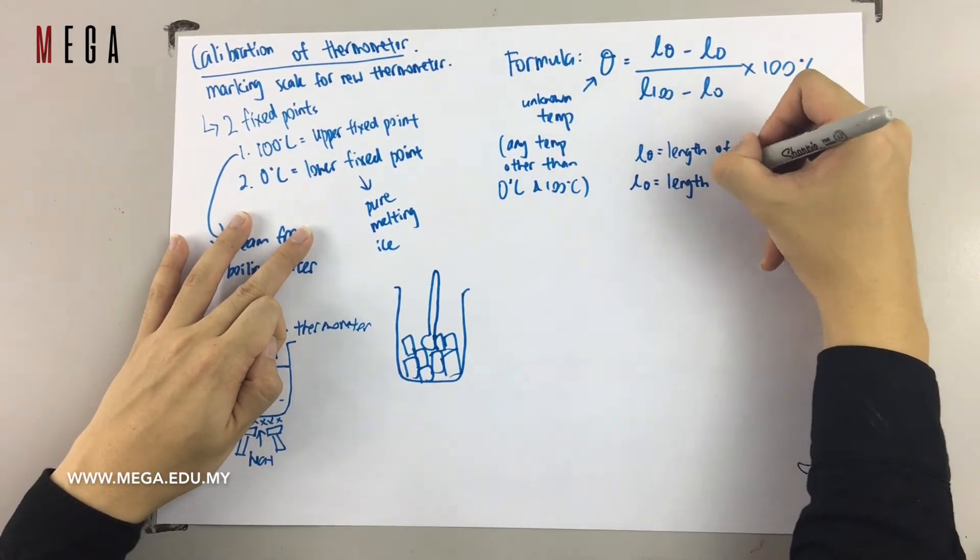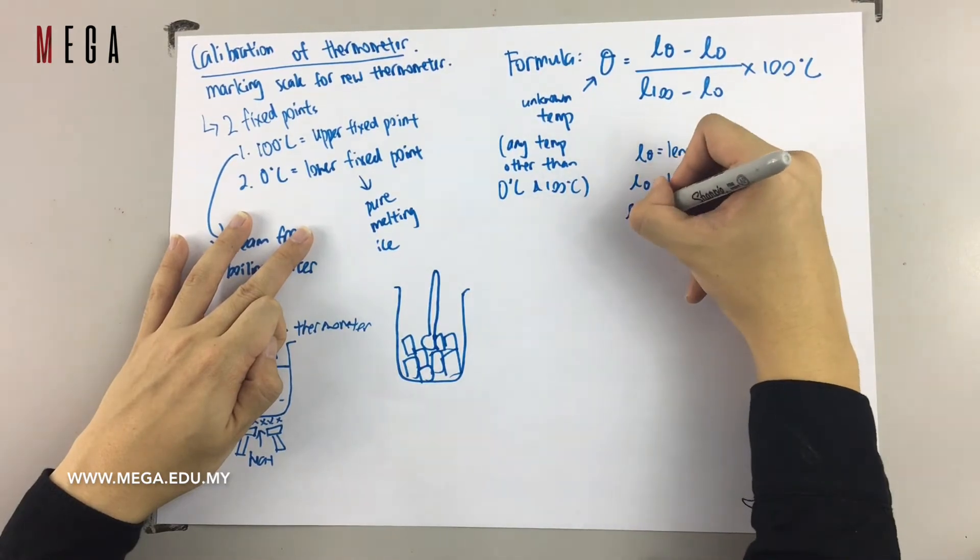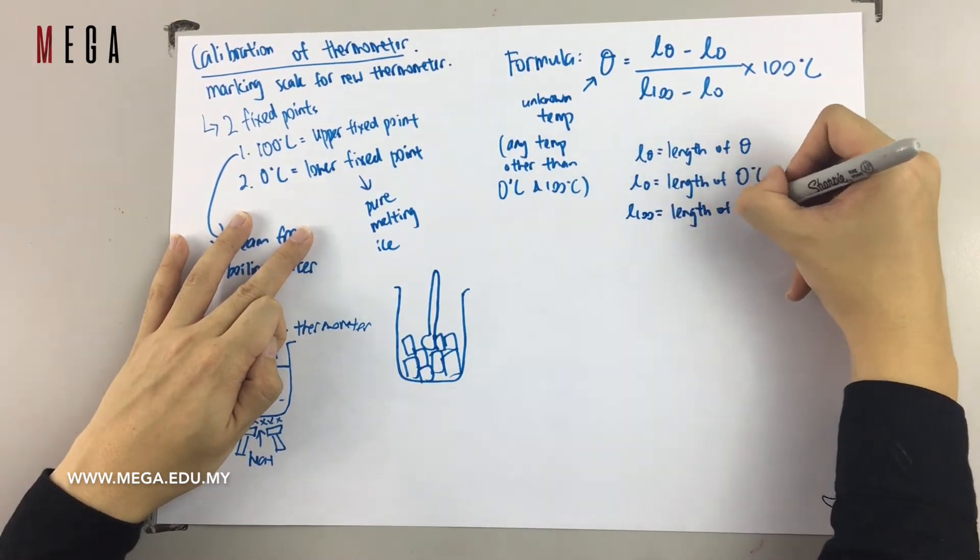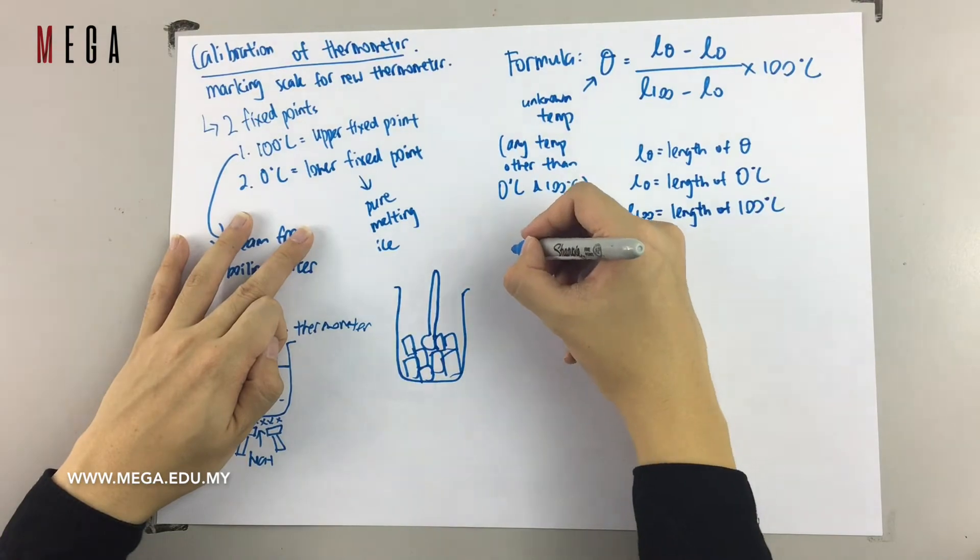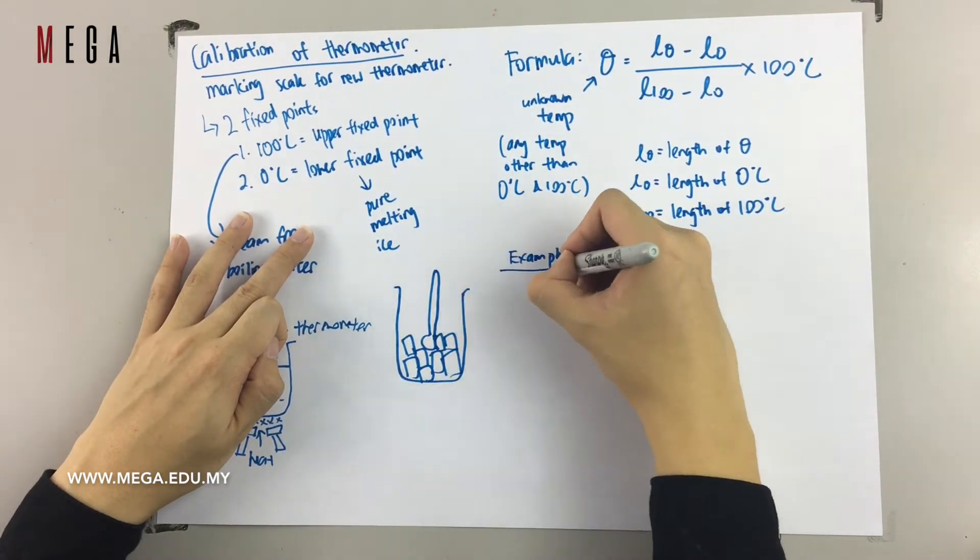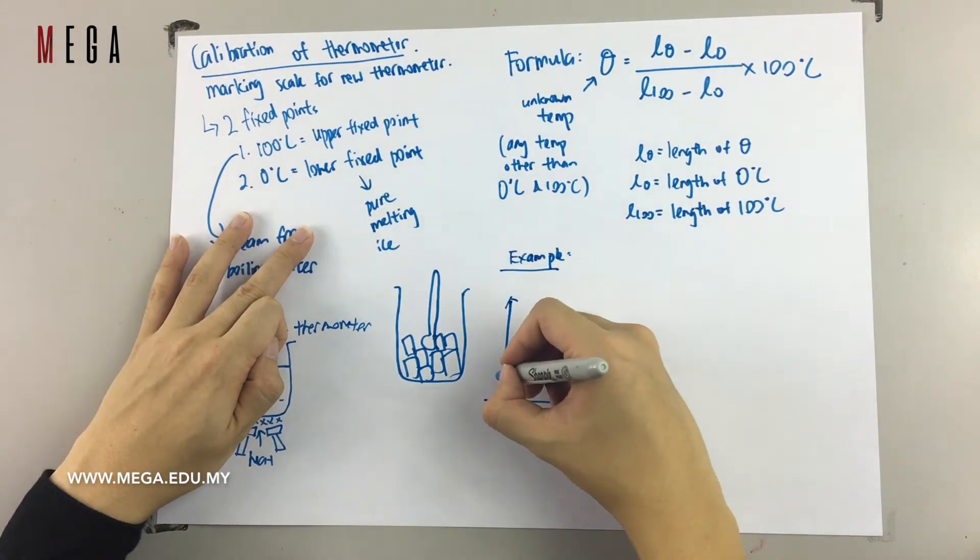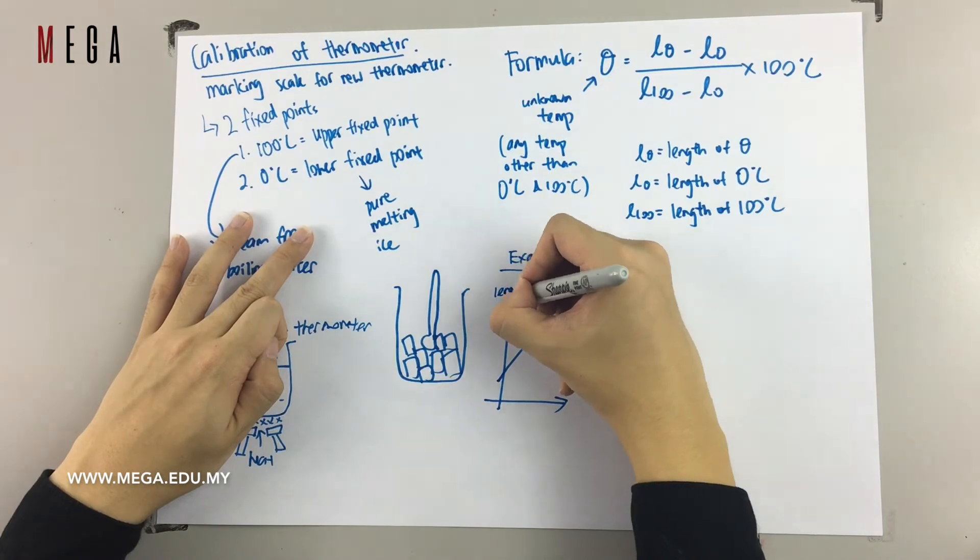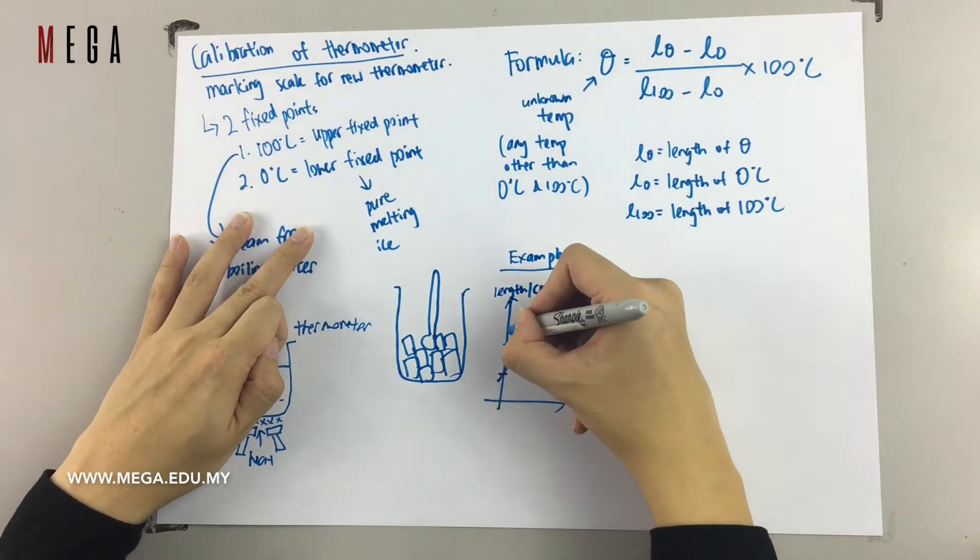So what is theta? Theta is the temperature which is other than 0 and 100 degrees Celsius. Any temperature can work. And then the L means the length of theta, length of 0 degrees Celsius, and length of 100 degrees. So let's check the example at the bottom there.